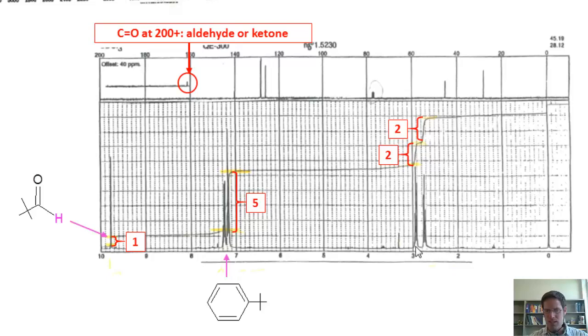Now what about these? These signals down here appear all below 5 ppm. What land is that? It's single bond land. So if I have something that integrates for 2 and it's in single bond land, what could it be? It's a CH2. That's it. Here I've got another signal that integrates for 2, single bond land. What is it? It's a CH2.